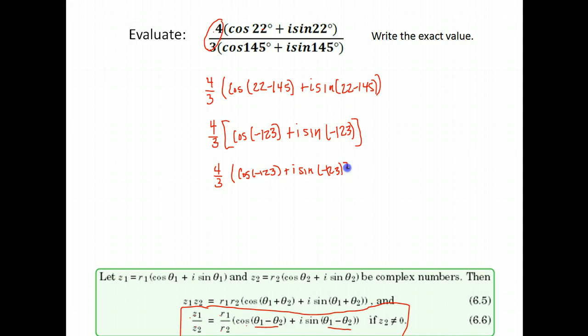Now there are several ways we could write that if we wanted to make it smaller. Remember our abbreviation we can use for cosine i sine. We would have 4/3 cis as our abbreviation, and then we put the angle. So we could also write it this way. That makes it a little shorter.